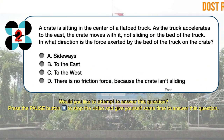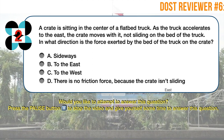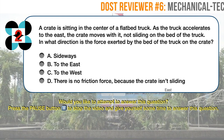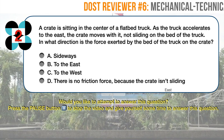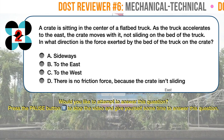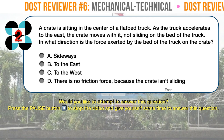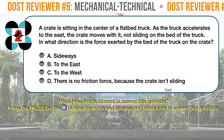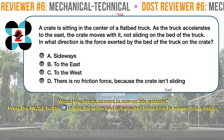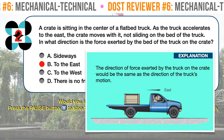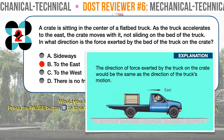Question number two. A crate is sitting in the center of a flatbed truck. As the truck accelerates to the east, the crate moves with it, not sliding on the bed of the truck. In what direction is the force exerted by the bed of the truck on the crate? A. Sideways. B. To the east. C. To the west. D. There is no friction force, because the crate isn't sliding. The correct answer is B: to the east. The direction of force exerted by the truck on the crate would be the same as the direction of the truck's motion.